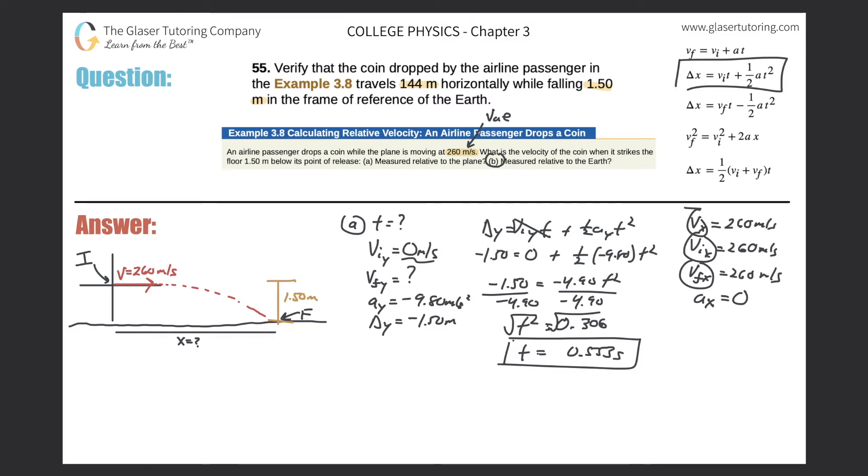And now we're looking for x, or the x displacement. That's our question. And we do know that the time the object is in the air is 0.553 seconds. So we can just basically from here do a very simple average velocity calculation. Velocity is equal to displacement over time.